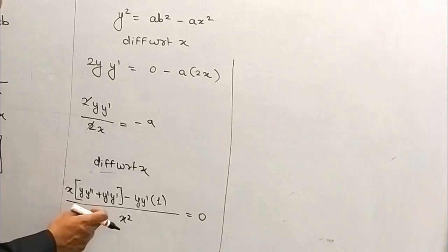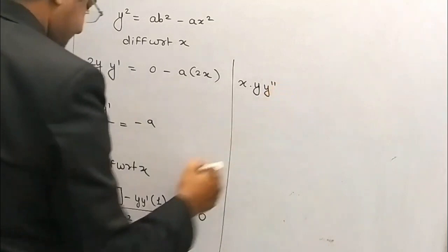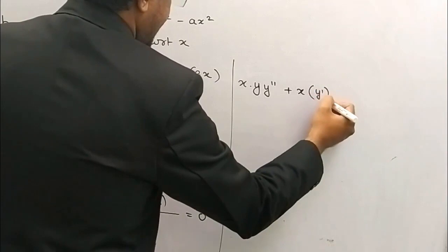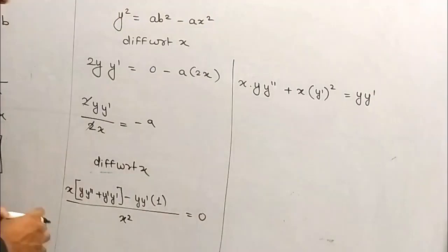Yeh jo dikh rahe aapko final answer hai. You can simplify it by writing x × y × y'. Yeh x iske saath into ho jaega. So x·(y')² idhar aa jaega, aur y·y' yahan. So this is how we found the answer — it was a really easy one. Please have a note of it.